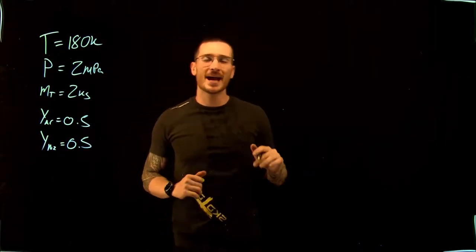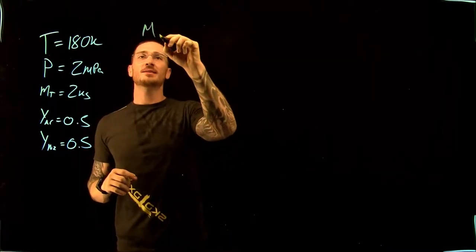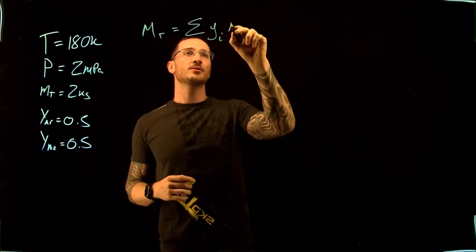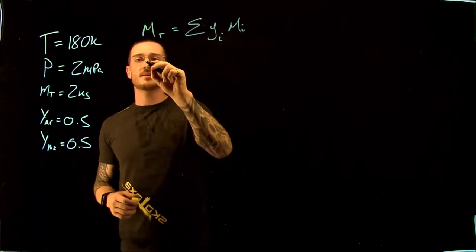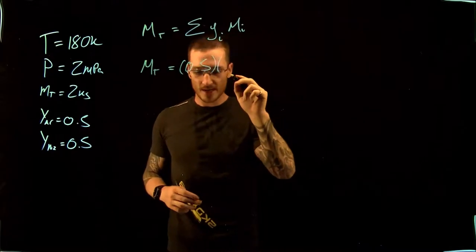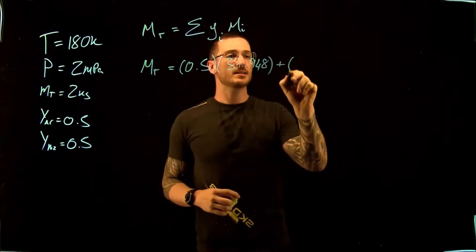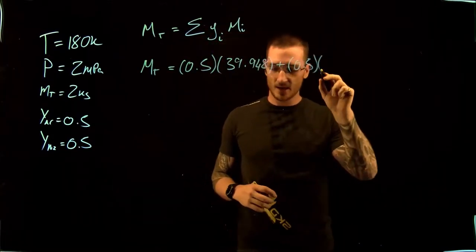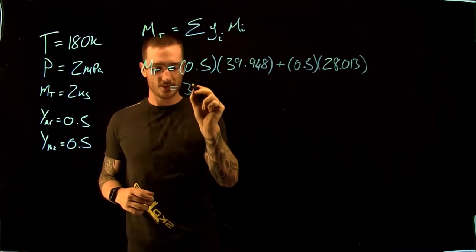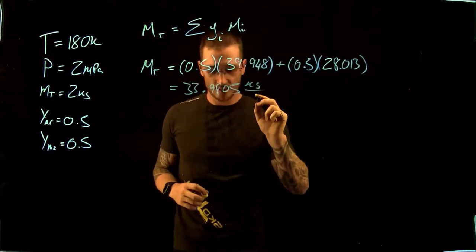Starting with the ideal gas method, we need to find the molar mass for our mixture. The molar mass of the mixture is equal to the sum of the mole fractions for each component times the molar mass of that component. So we get: 0.5 times the molar mass of argon (39.948) plus 0.5 times the molar mass of nitrogen (28.013), giving us a total molar mass of 33.9805 kg/kmol.